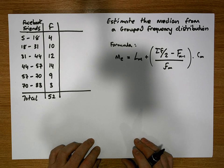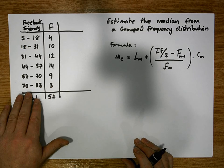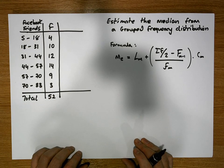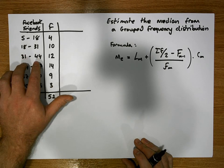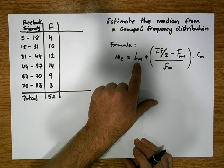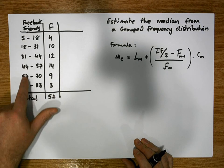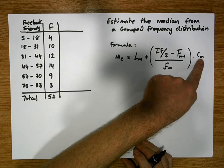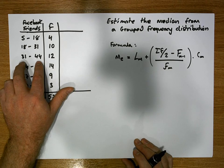Once we figured out which one of these classes represents the median class, well then L of m represents the lower bound of the class, and C of m represents the width of the class.